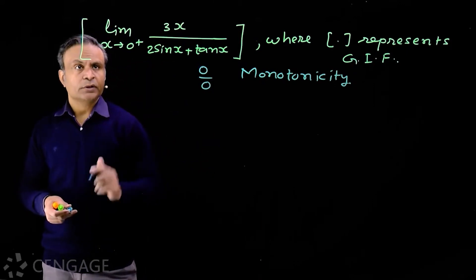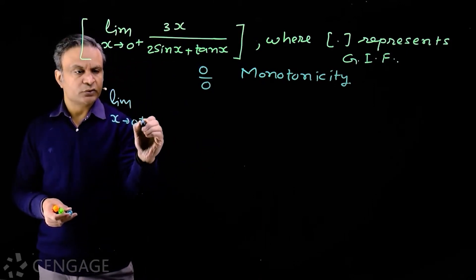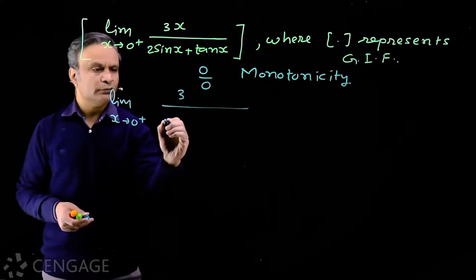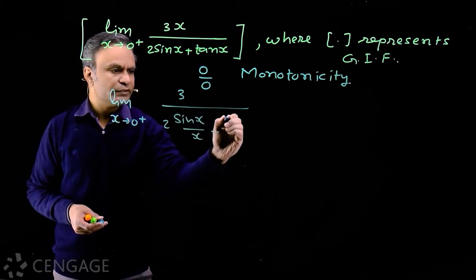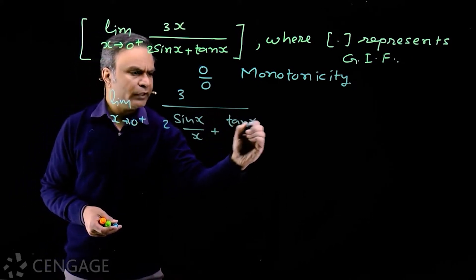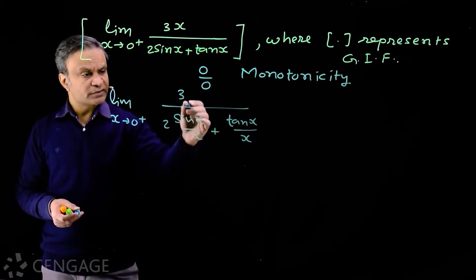So we have limit x tends to zero plus of 3 upon 2 sine x over x plus tan x over x.